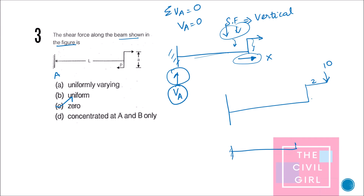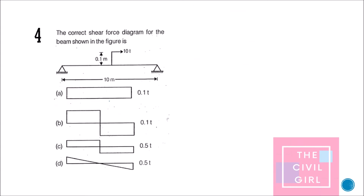For contrast: if the beam had a vertical load of 10 kN at a distance of 2 meters, that 10 kN would produce a clockwise moment of 20 kN·m and would also introduce a vertical force. In that case, since we have a vertical force, shear force would be present.